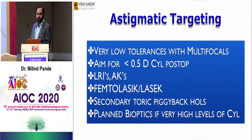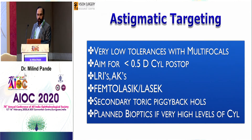Astigmatism is even more of a problem because the tolerance for astigmatism with multifocal or presbyopia lenses is even more critical. We have to aim for getting patients to under half a diopter of cylinder post-op. There are various ways to achieve this: astigmatic keratotomies, LRIs afterwards, or secondary toric piggyback lenses. In very high levels of astigmatism, I think it's important to discuss a two-stage bioptics procedure.